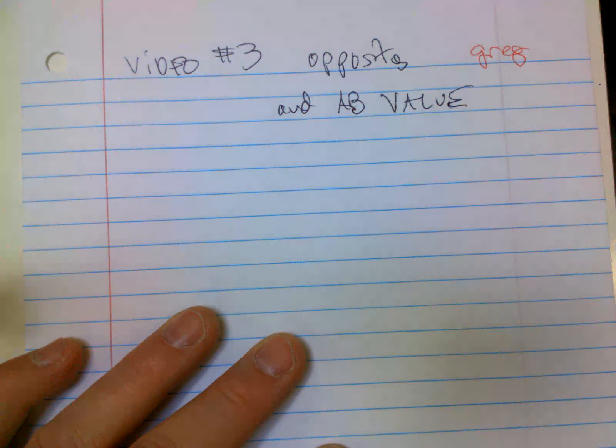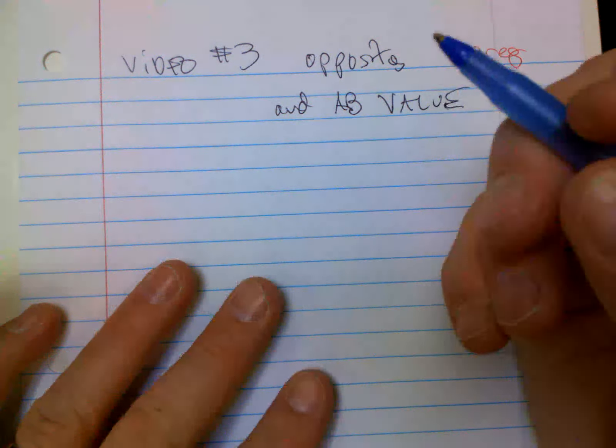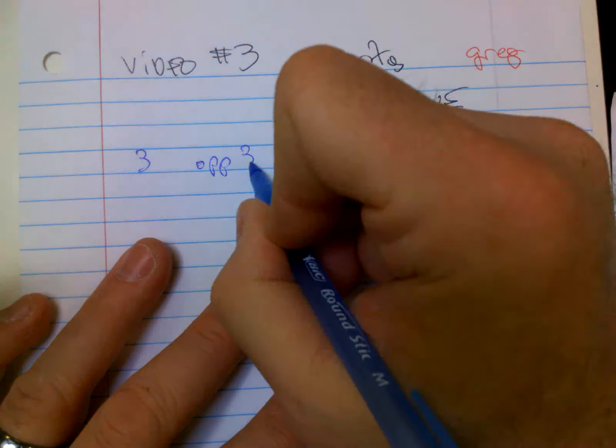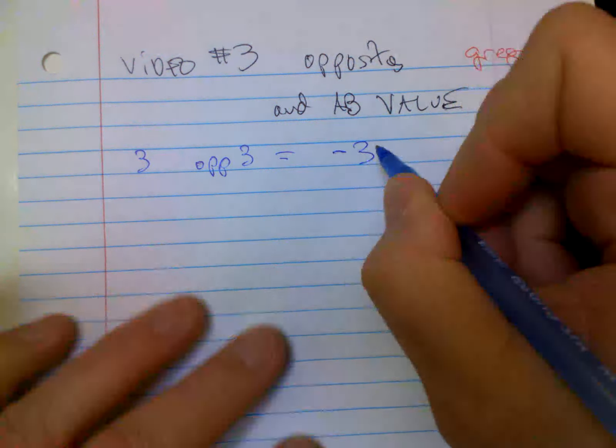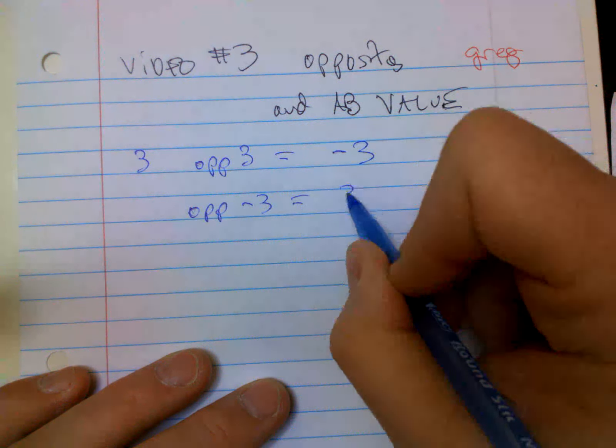Opposites. Everybody understands opposites. Opposite of day, night. Different things like that. So what we're talking about with numbers, if I have a three, the opposite of three equals negative three, the opposite of negative three equals three.